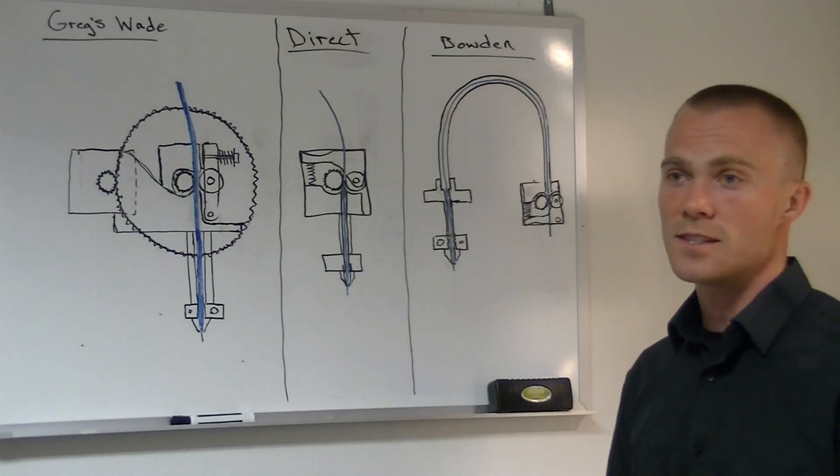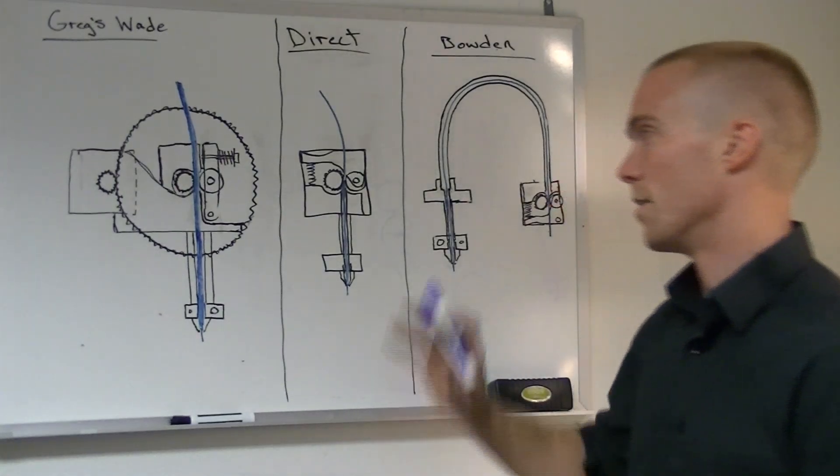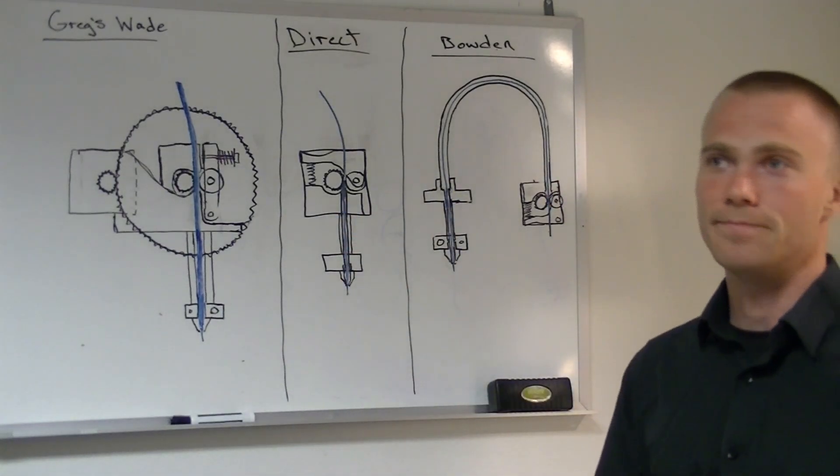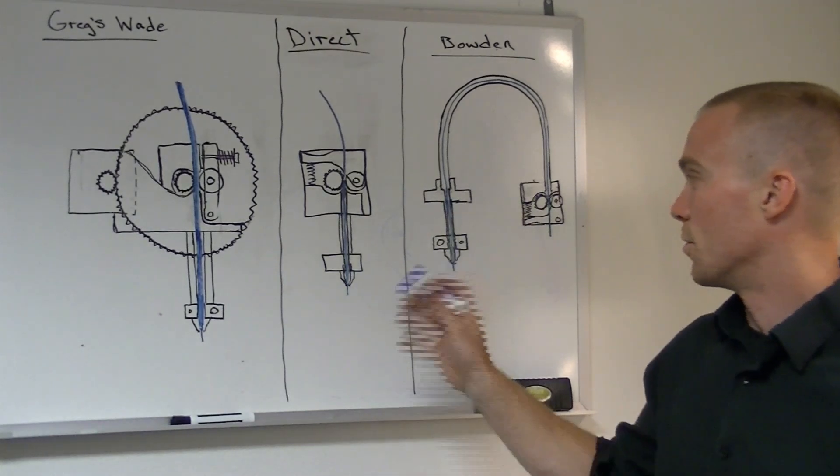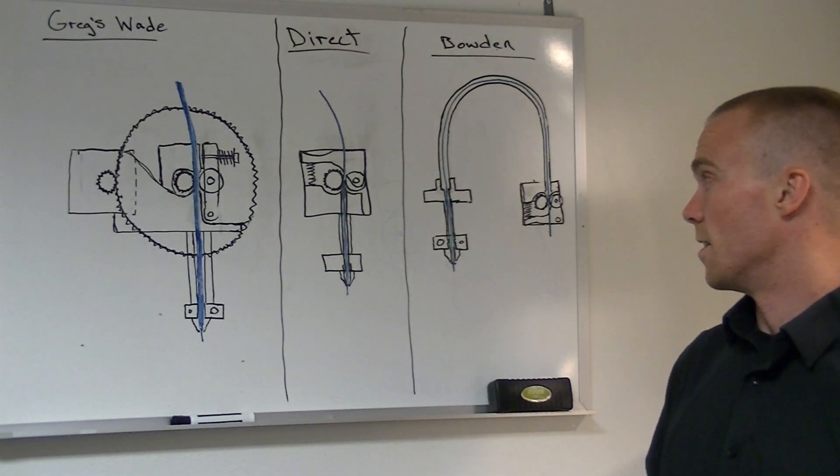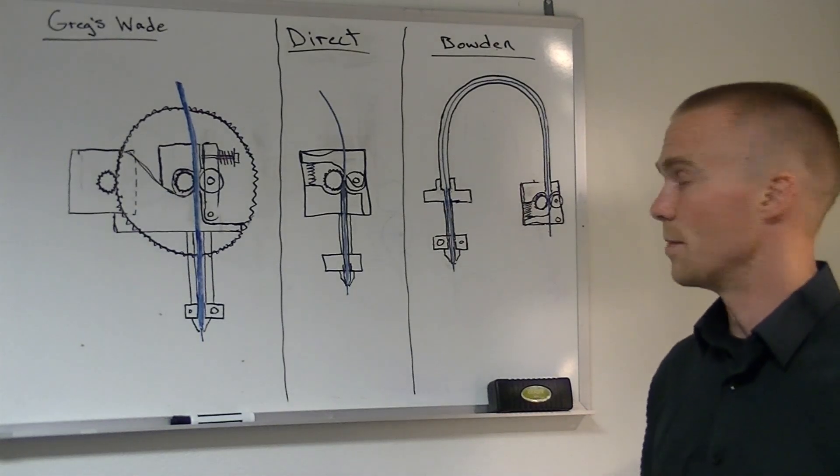There are a lot of different variations of these, but they're kind of three main types that you'll see. The Greggs-Wade extruders that you'll see on RepRaps and MolesBot and a lot of other three millimeter machines. The direct drive extruders that you'll see on MakerBots and LeapFrogs and a lot of the other 1.75 millimeter machines.